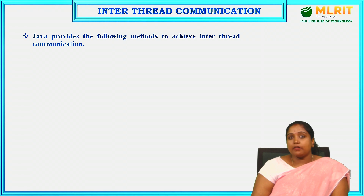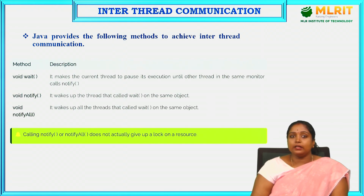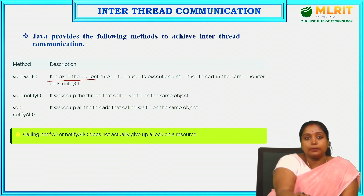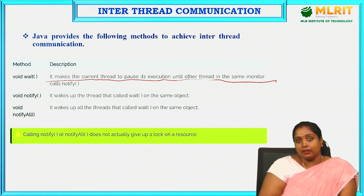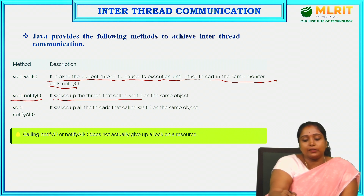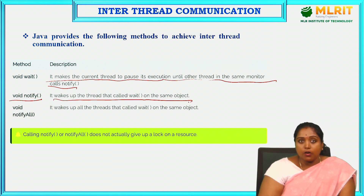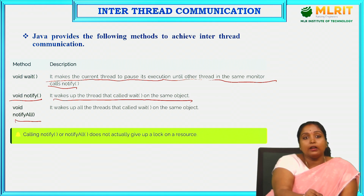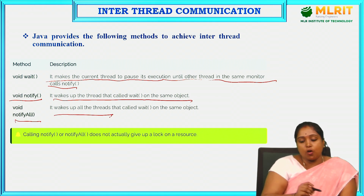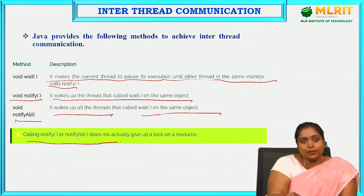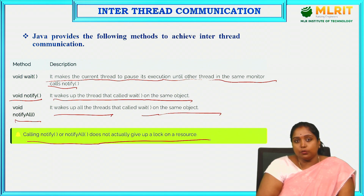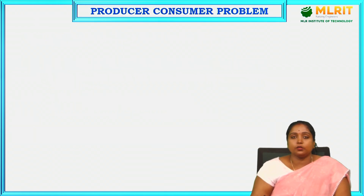Java provides these methods to achieve inter-thread communication. The first is the wait method, which makes the current thread pause its execution until another thread in the same monitor calls notify. The notify method wakes up a single thread that called wait on the same object. notifyAll wakes up all the threads that called wait on the same object. Calling notify or notifyAll does not actually lock a resource.